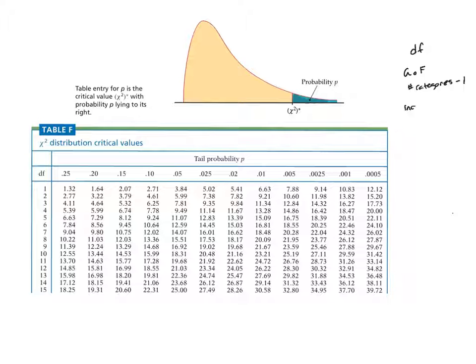If I'm doing a test for independence, it's a little bit different. The test for independence relies on a contingency table, and so I take r minus 1 times c minus 1, where r is the number of rows and c is the number of columns, not including the totals.